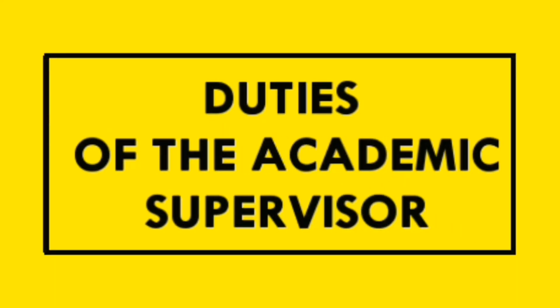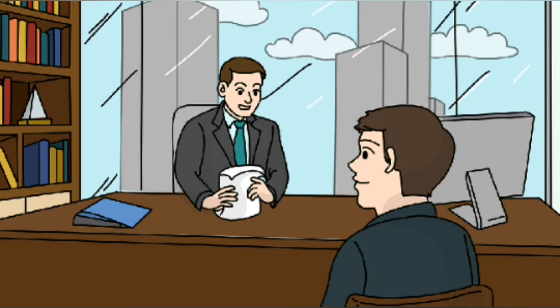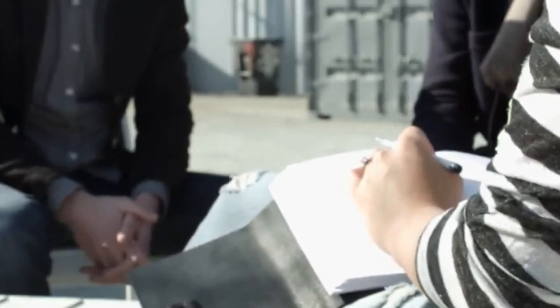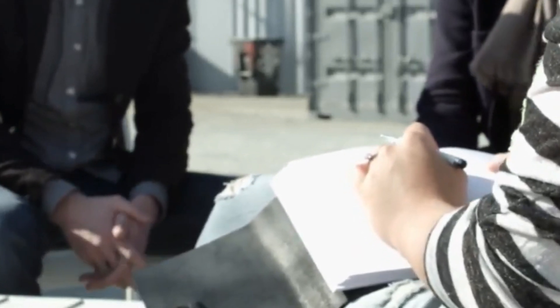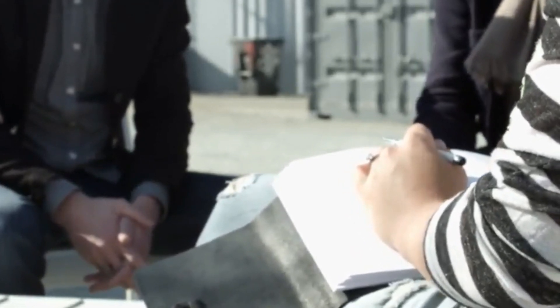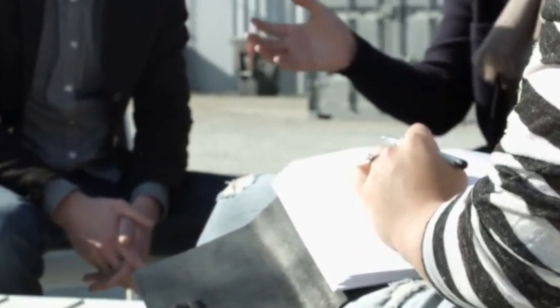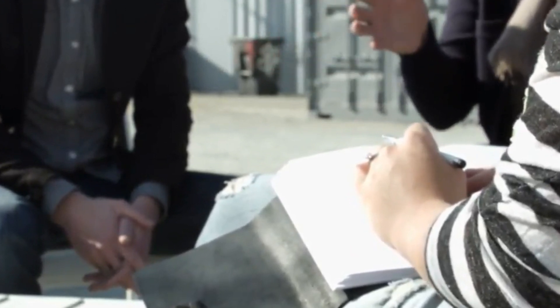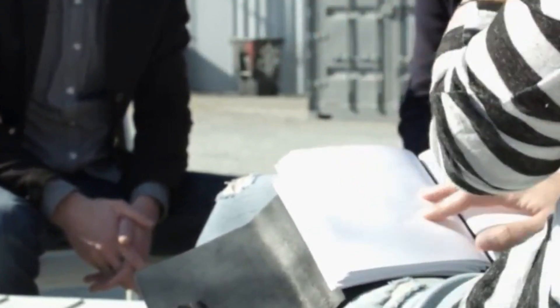Duties of the academic supervisor. There is no doubt that the academic supervisor plays an important role in the success of a master's or doctoral student. The academic supervisor either helps you to prepare good research within the required time, or you rely entirely on yourself, and this may cause you to fall into errors and delays. So, what are the duties of a good academic supervisor?